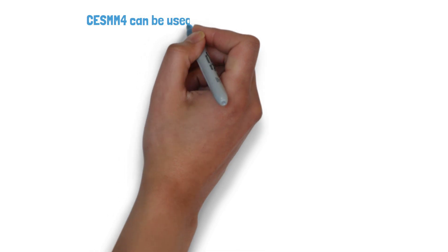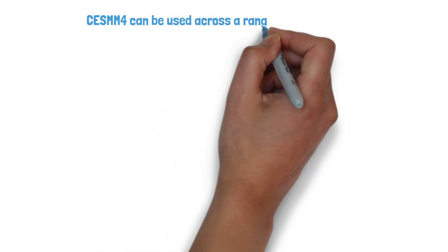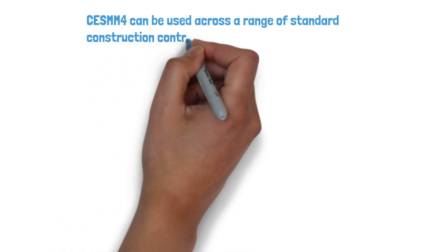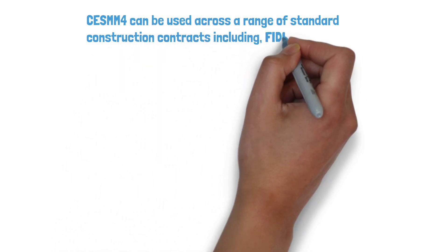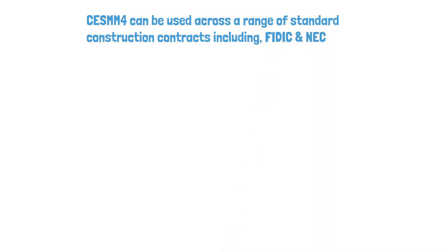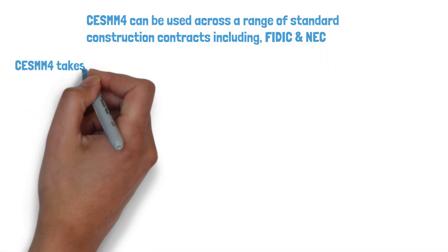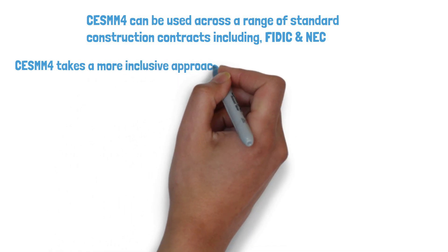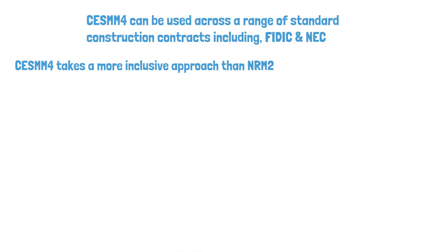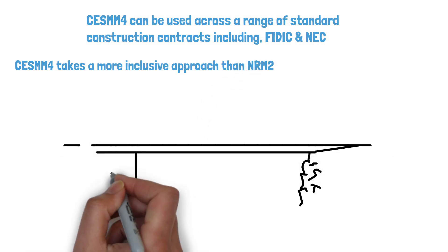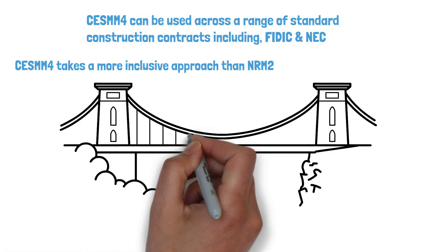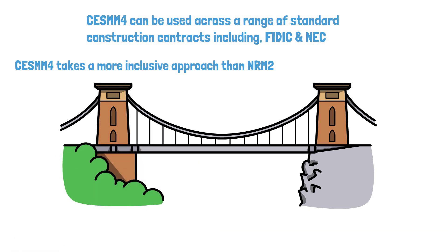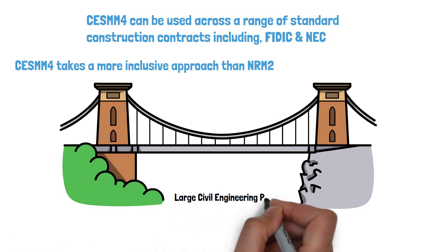Like other methods of measurement, such as NRM2, CESMM 4 can be used across a range of standard construction contracts, including FIDIC and NEC. The difference between NRM2 and CESMM 4 is that generally NRM2 gives more emphasis to detail, whereas CESMM 4 tries to take a more inclusive approach to the measurement process. This is due to the nature of the work that has been developed to guide civil engineering, as building work comprises many different trade types versus civil engineering works that generally consist of large quantities of a comparatively small range of items.